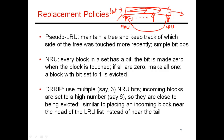Blocks are placed in ways, but logically there is a recency list tracking which block was touched most and least recently. For a two-way cache, LRU is easy to implement with just one bit: if the bit is 0, way 1 is most recently used; if 1, way 2 is most recently used.